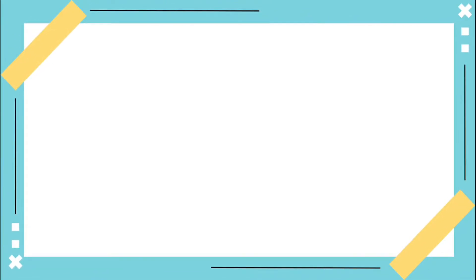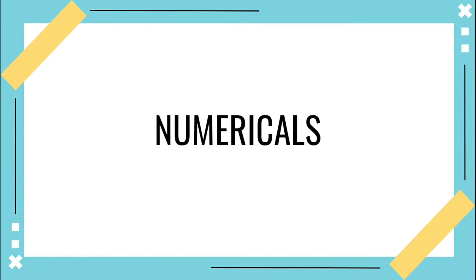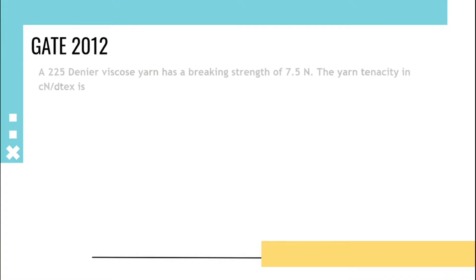Hello guys, welcome to TIPS, a platform for textile problems and solutions. Now we are going to learn about numericals based on tenacity. A 225 denier viscose yarn has a breaking strength of 7.5 newton. The yarn tenacity in centi-newton per deci-tex is asked, so the solution becomes: